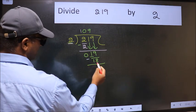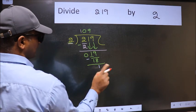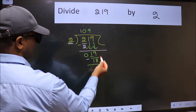Now we should subtract. We get 1. 1 smaller than 2 and we don't have any more numbers to bring it down.